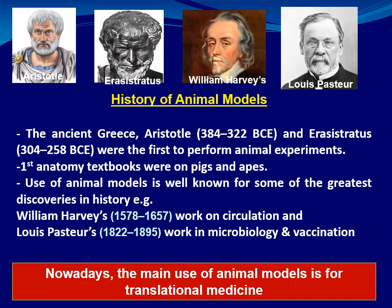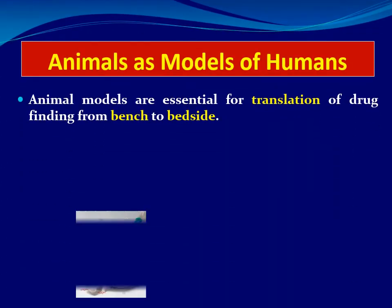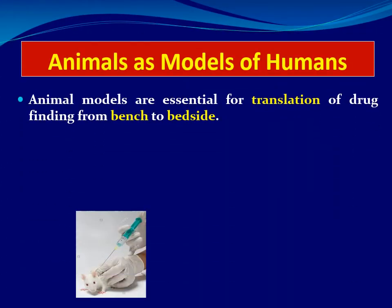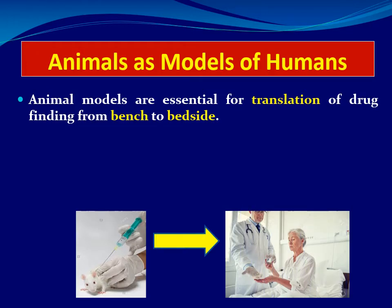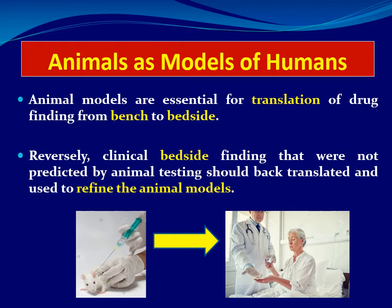Nowadays, the main use of animal models is for translational medicine. Animal models are essential for the translation of drug findings from the bench side to the bedside — from the experimental view to the clinical view. Reversely, clinical bedside findings not predicted by animal testing should be back-translated and used to refine the animal models.